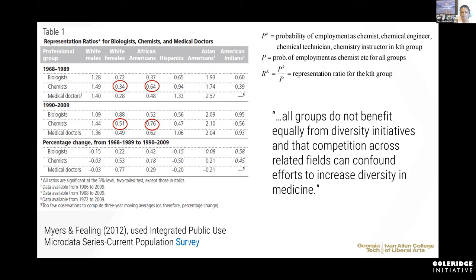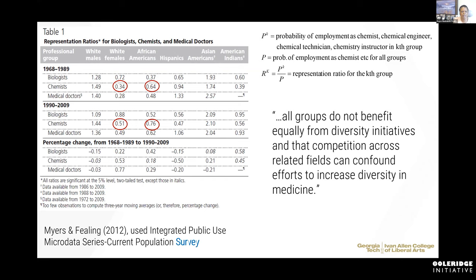We found that all groups do not benefit the same from the same interventions. The second paper shows that if you're looking at white and Asian males, having post-baccalaureate education is more likely to increase participation in STEM fields. But if you're looking at Hispanics and Blacks, the wage pool is more likely to be bidding them into that. Post-baccalaureate education was just not a one-size-fits-all variable — there were many other characteristics that could really change whether someone was participating in STEM.